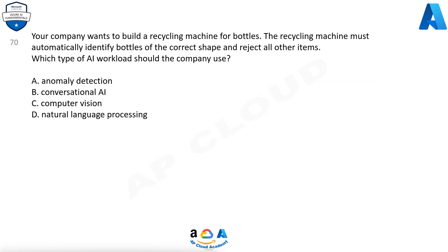Question 70. Your company wants to build a recycling machine for bottles. The recycling machine must automatically identify bottles of the correct shape and reject all other items. Which type of AI workload should the company use? A. Anomaly detection. B. Conversational AI. C. Computer vision. D. Natural language processing. The answer is C, Computer vision.